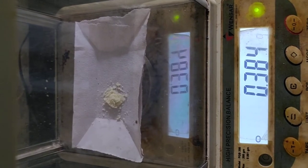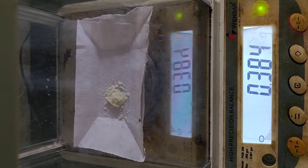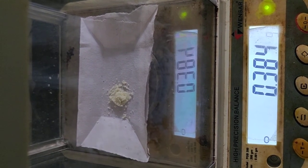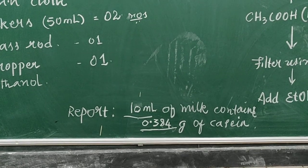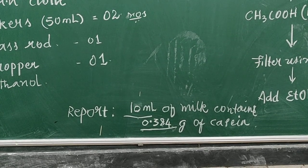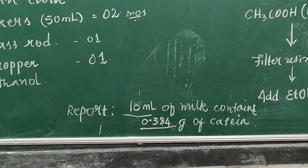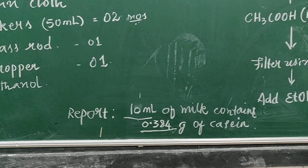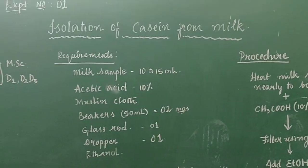After drying, weigh the amount of casein obtained. I have taken the paper weight. Now I have got 384 milligrams of casein. Now we can complete writing the report. 10 ml of milk sample contains 384 milligrams or 0.384 grams of casein. So this is the first experiment which we have successfully completed.